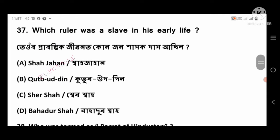Question 37: Which ruler was a slave in his early life? Right answer: Qutb-ud-din Aibak, option number B.